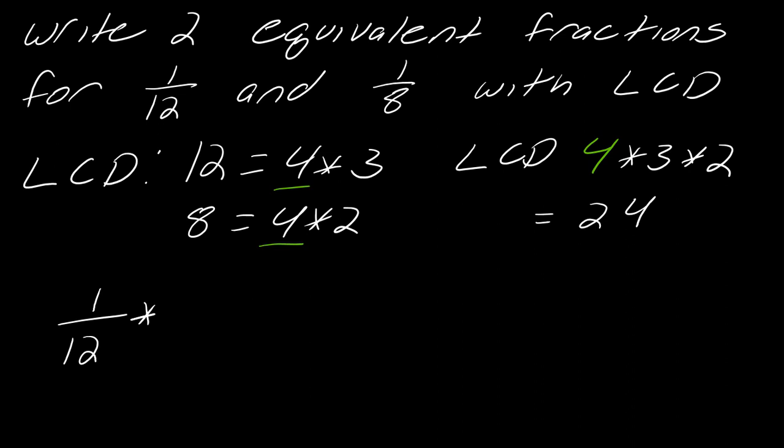I've got 1/12. I need to multiply 12 by 2 on top and on bottom, so this becomes 2 over 24. For my other one, I've got 1 over 8. What do I need to multiply 8 by to get to 24? I need to multiply the top and bottom by 3. This is going to be 3 over 24.